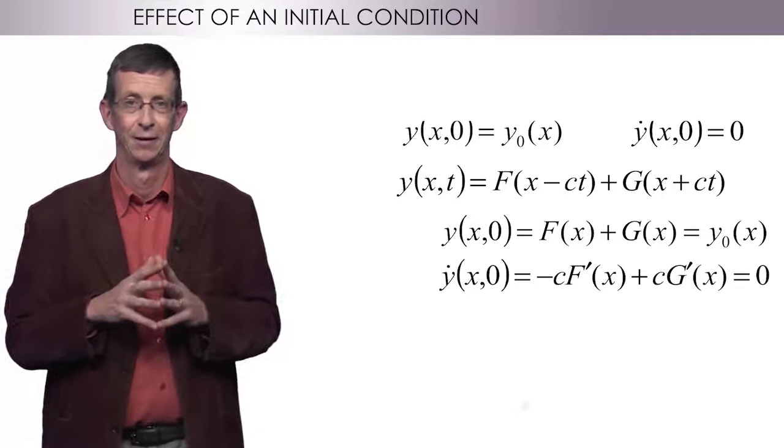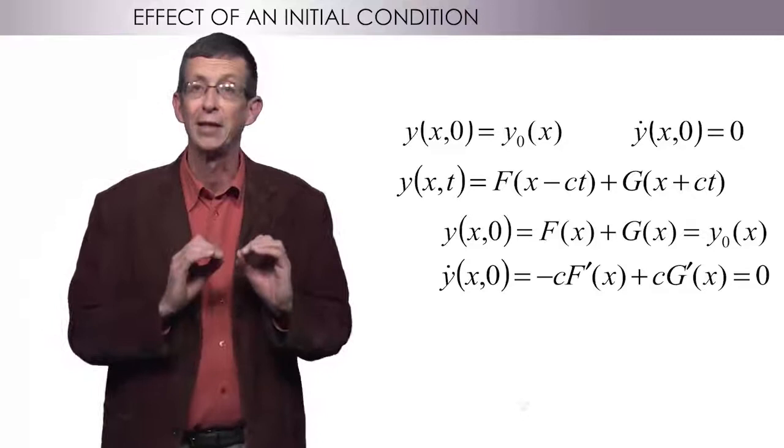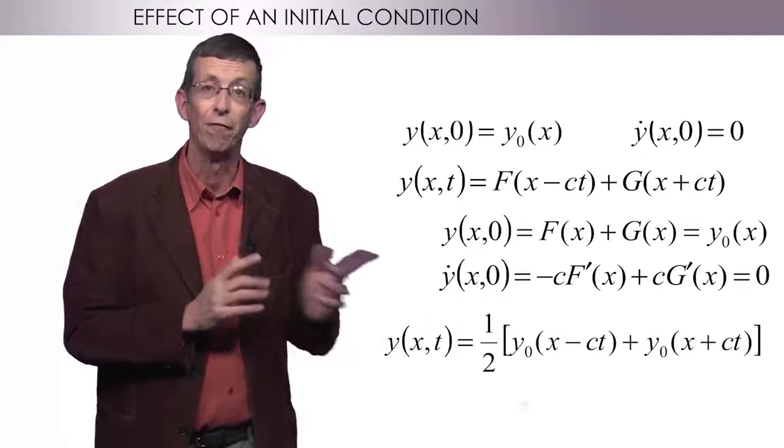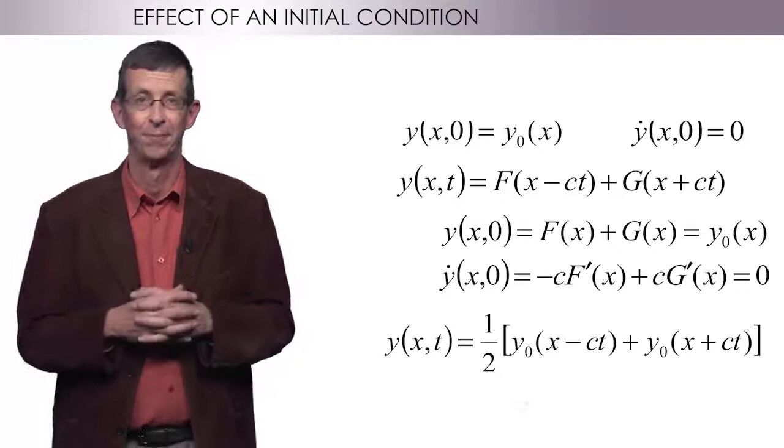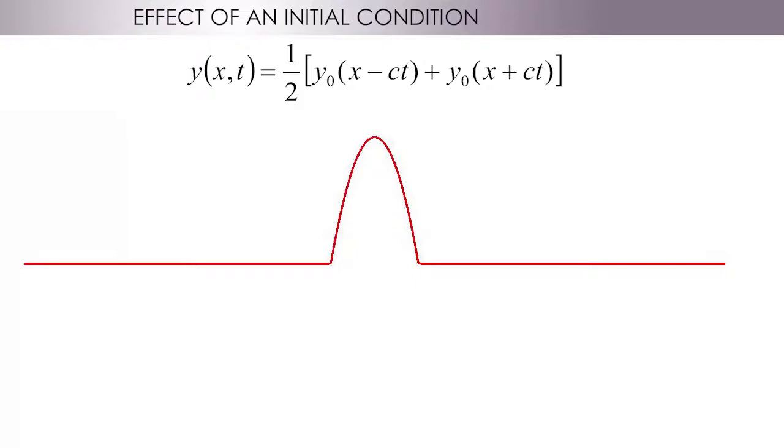I know my functions f and g, which means that I know y for all space and time. y of x and t equals one half of f of x minus ct plus g of x plus ct. What does this look like? Here it is.